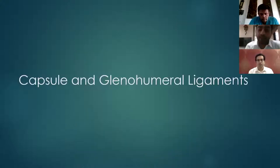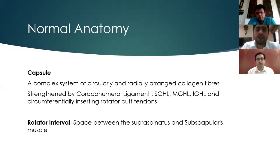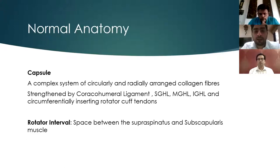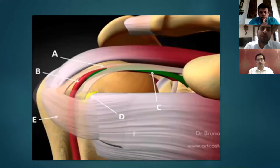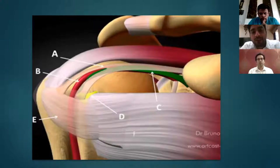The capsule is a complex system of circularly and rarely arranged collagen fibers, strengthened by the coracohumeral ligaments, SGHL, MGHL, IGHL, and circumferentially inserting into the rotator cuff tendons. The rotator interval is the space between the supraspinatus and the subscapularis. In the rotator interval: A denotes the coracohumeral ligament radiating laterally from the coracoid process inserting into the greater and lesser tuberosities; B marks the long head of biceps tendon; C marks the SGHL; D is the tendinous slip; E is the transverse humeral ligament; and F is the subscapularis muscle.